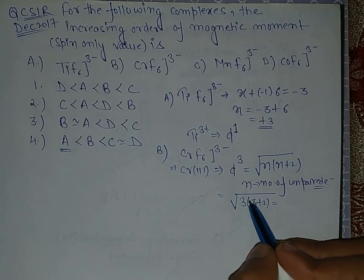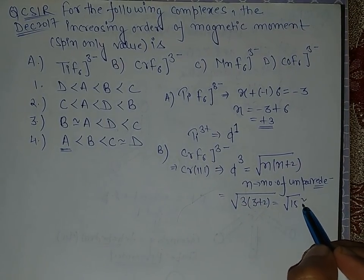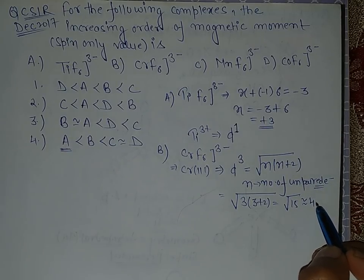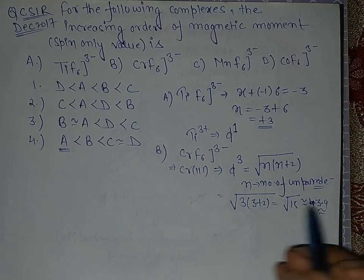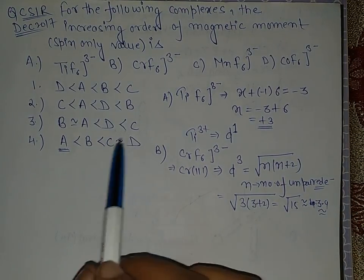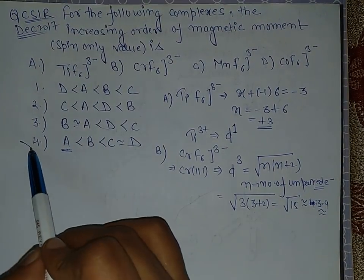There are three electrons, so √(3×5) = √15, which is around 3.9. So B is certainly greater than A. B is greater than A, so 4 is the correct option.